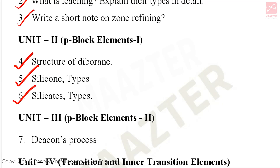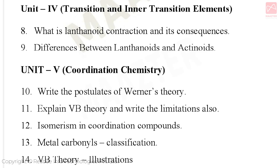Unit 3: P Block Elements 2 — very important 5-mark question on the structure related to diborane axis. Unit 4: Transition and Inner Transition Elements — lanthanoid contraction and its consequences is very important for 5-mark questions.